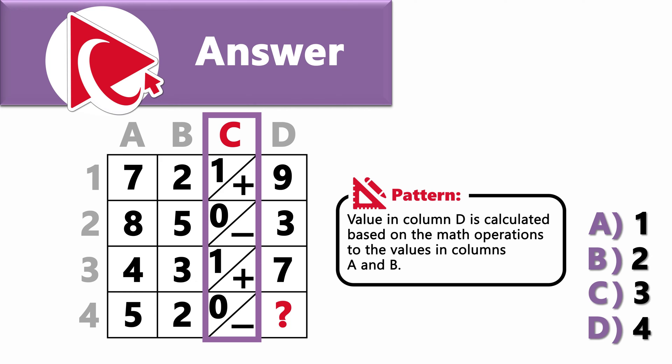Let's look at the example. To make it easy, let's substitute the numbers in column C with the math operations. The operation for row 1 would be plus, which is addition, for row 2 would be sign of minus, which is subtraction, for row 3 plus again, and for row 4 minus.